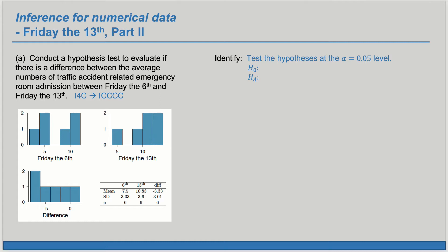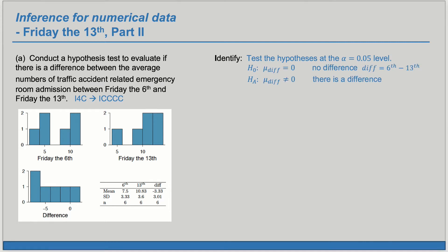We have data for Friday the 6th, data for Friday the 13th, and data for the paired differences. So we really have paired data here that we want to take advantage of. Our null claim is that the mean of the paired differences is zero — that is, there is no difference between traffic accident-related emergency room admissions between Friday the 6th and Friday the 13th. The alternate claim is that the mean of the differences is not zero, which is to say that there is a difference.